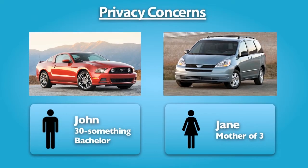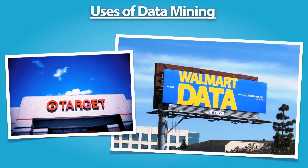Targeted and personalized internet ads are delivered based on analyzing the mountains of personal data collected on each of us as we surf the internet, use loyalty shopping cards, and interact on social networking sites. In a study commissioned by the NAI, researchers discovered that well-targeted ads are twice as effective as ads delivered without targeting. Walmart, Target, and other large retailers use sophisticated data mining techniques to decide what products to sell, when to sell them, how to display the products in their stores, and what prices to charge.